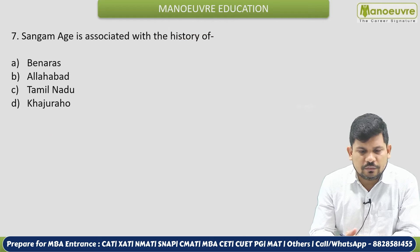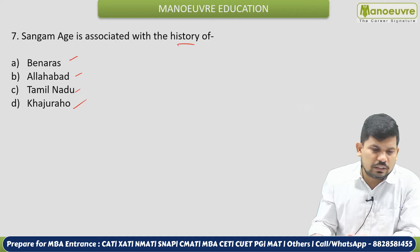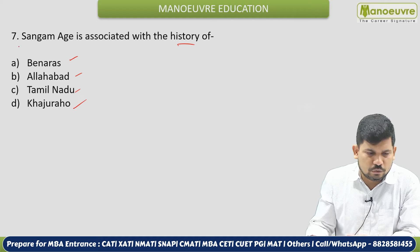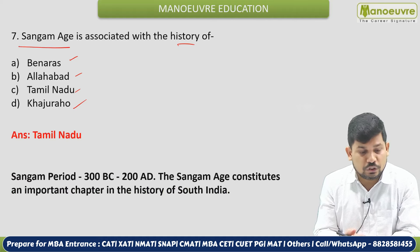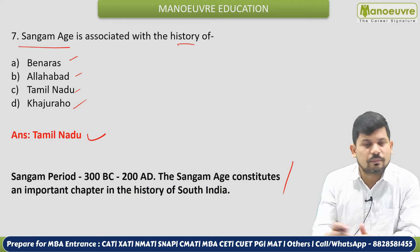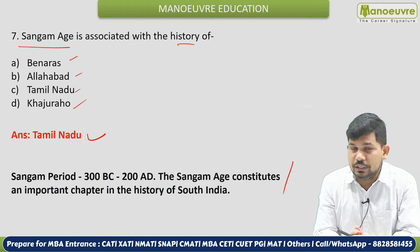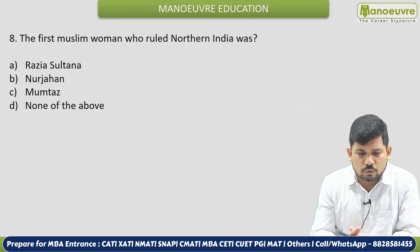Next: The Sangam Age is associated with the history of which place — Varanasi, Allahabad, Tamil Nadu, or Khajuraho? The correct answer is Tamil Nadu. This is a very important question — remember Tamil Nadu. Full details are provided which is very helpful for your revision.